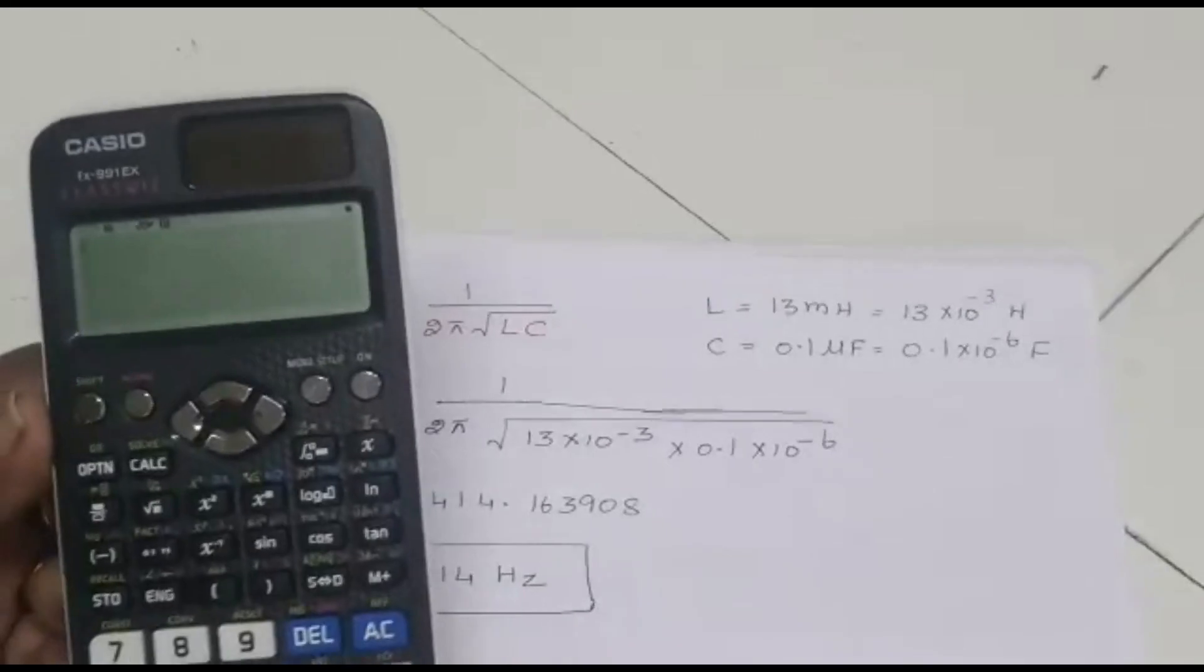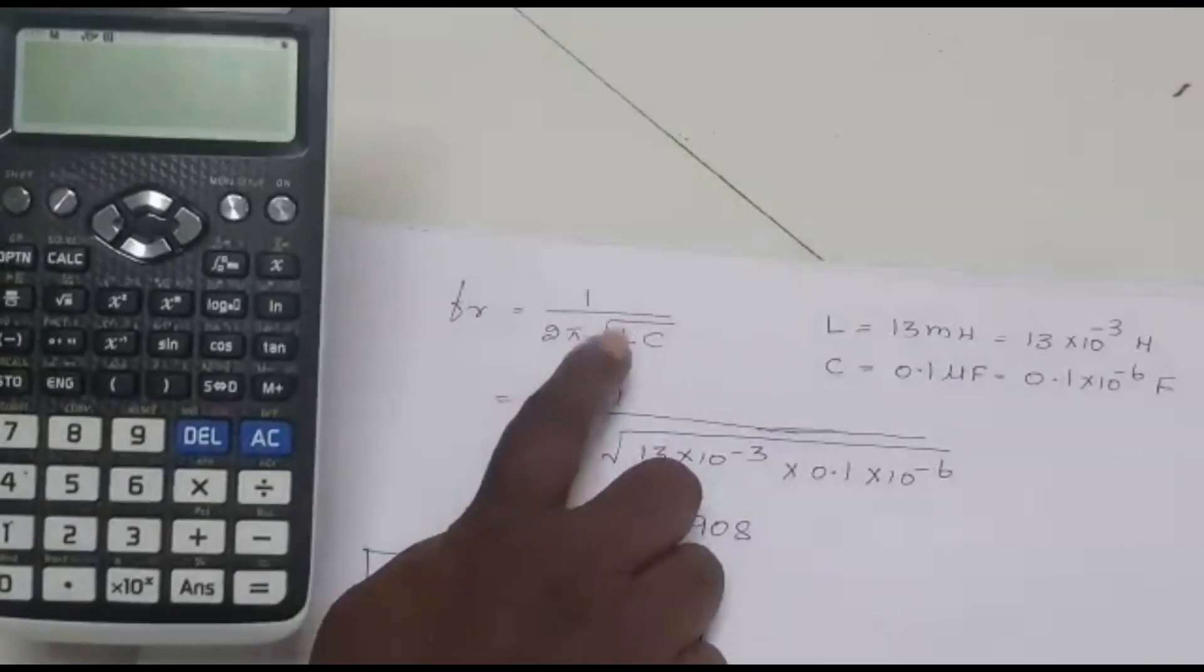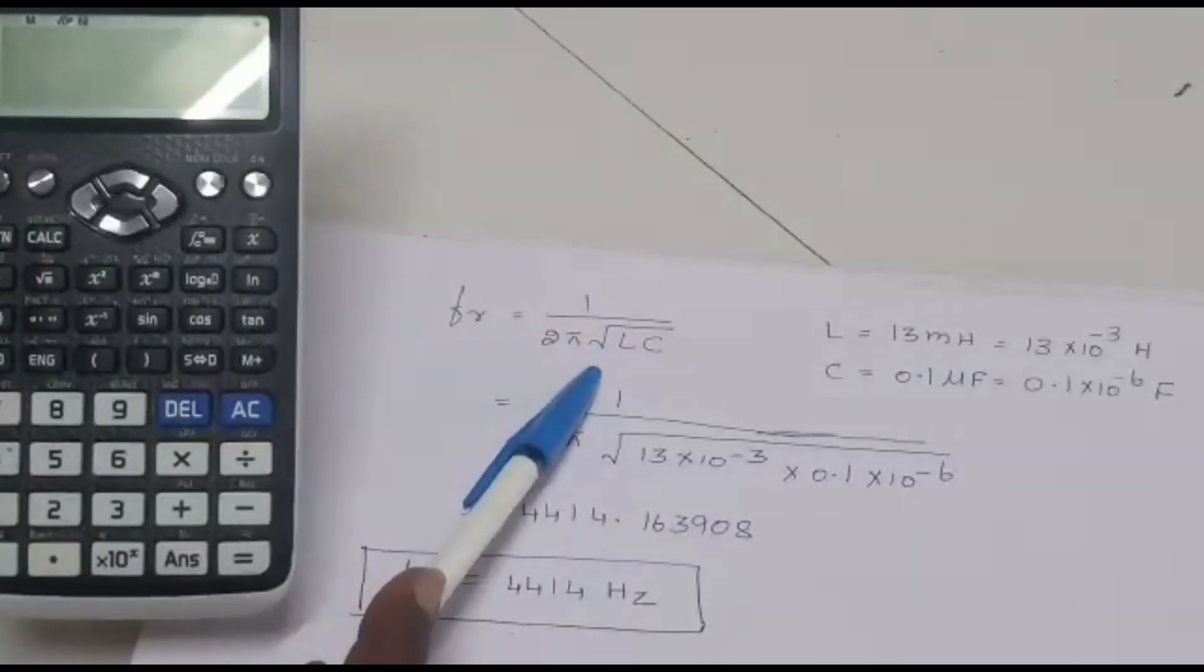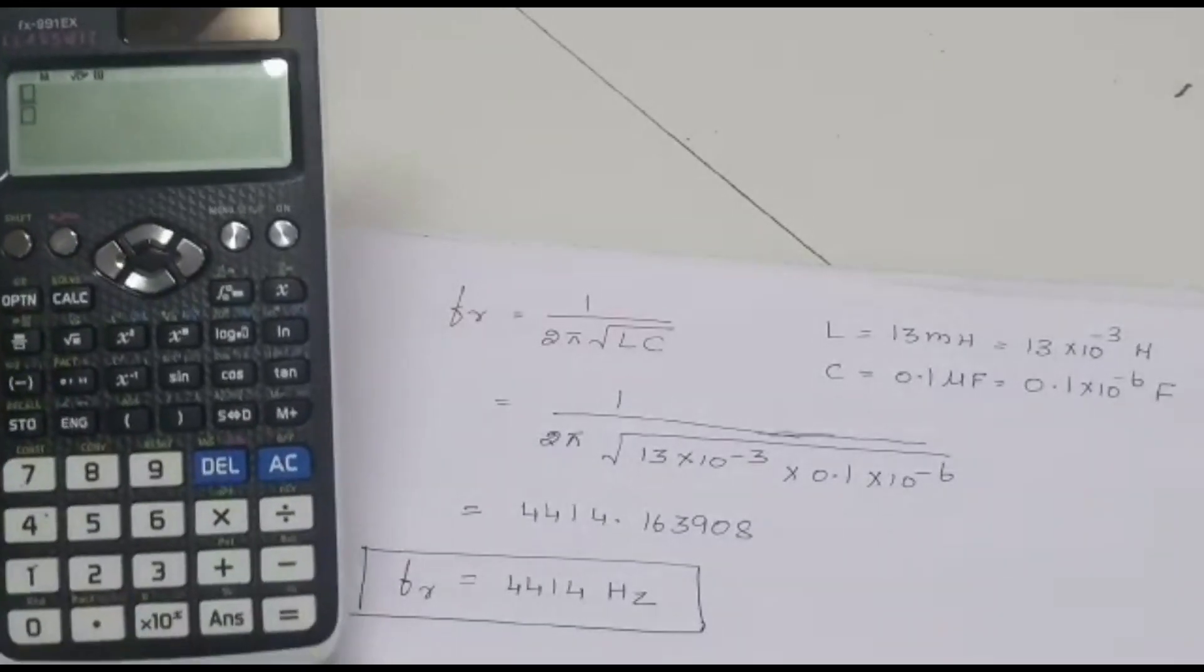See here, the calculator I have taken. The formula is 1 by 2 pi root of LC. For numerator and denominator, we should press this button.